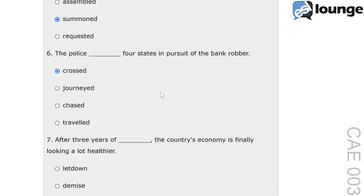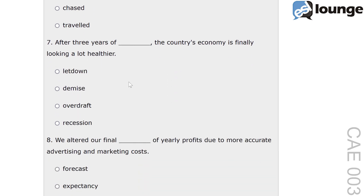Question 7. After three years of blank, the country's economy is finally looking a lot healthier. The options are letdown, demise, overdraft and recession. The correct answer is recession. Recession means a period of temporary economic decline. For example, the country is recovering from a recession — this indicates a time of economic downturn. In this context, recession describes the country's economic state, which is not good.